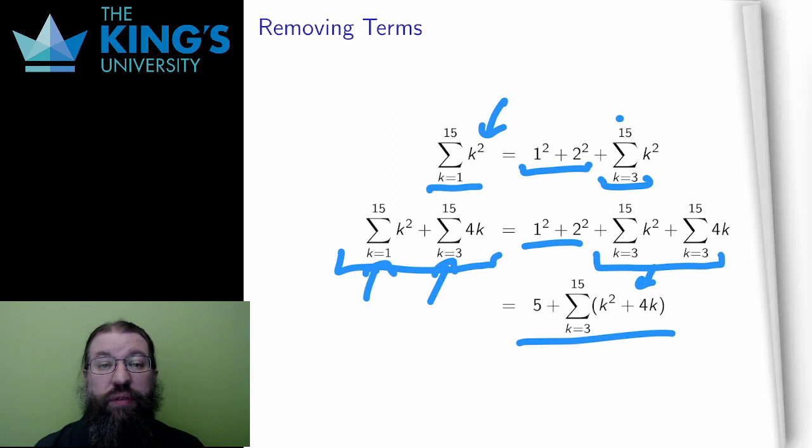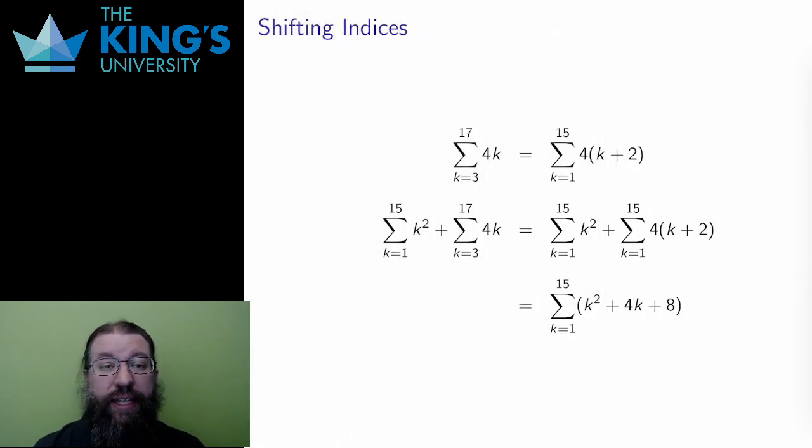A second trick is to shift the index of the sum. This is like a balancing act. I have the bounds outside the sum and the term inside the sum. I can adjust the index, but I have to balance out what I do to the bounds with what I do to the index. For example, if I subtract 2 from the bounds in this sum, the bounds change from 3 to 17 to 1 to 15. I have subtracted 2 from both the upper and lower bounds. To balance this out, I have to add 2 to the index inside the term. I replace k with k plus 2 in the term. These two sums are equal.